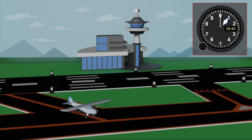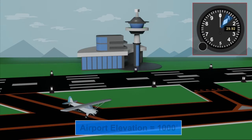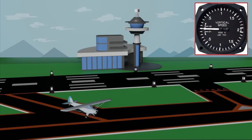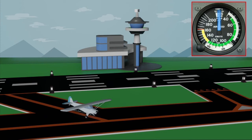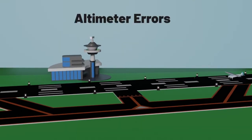You know that your altimeter should be reading the airport elevation — here in this video we have a thousand feet elevation that should be reading on the altimeter. The VSI should be reading zero feet per minute because you're not climbing or descending, and the airspeed indicator should be reading zero knots if you're just sitting on the taxiway. Let's go over some possible errors we might see from each of these pitot-static instruments and how we should deal with them as pilots.